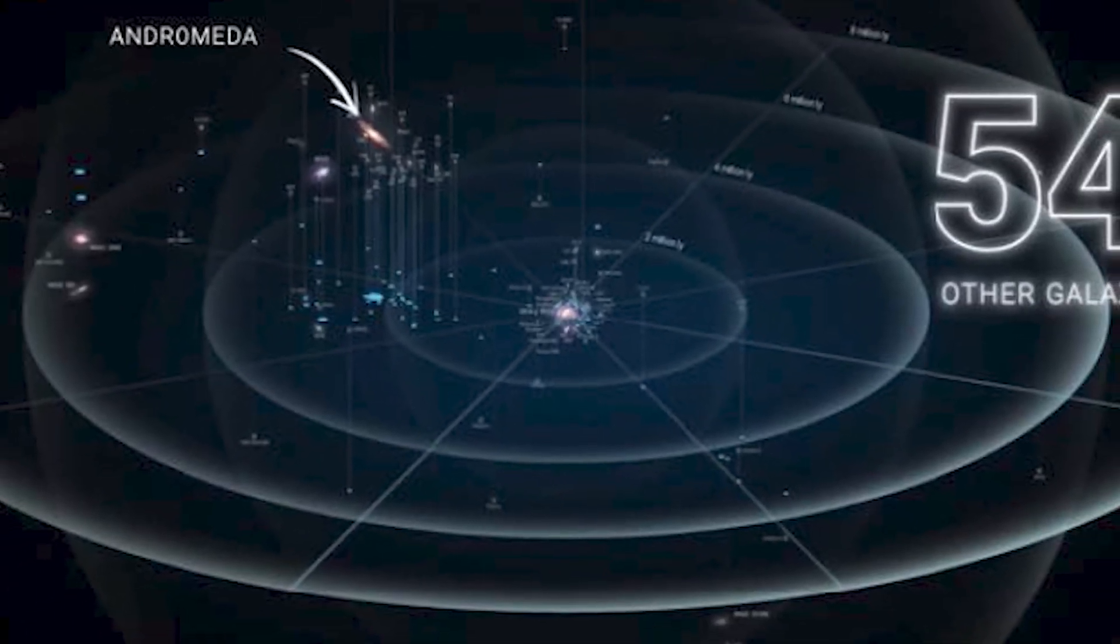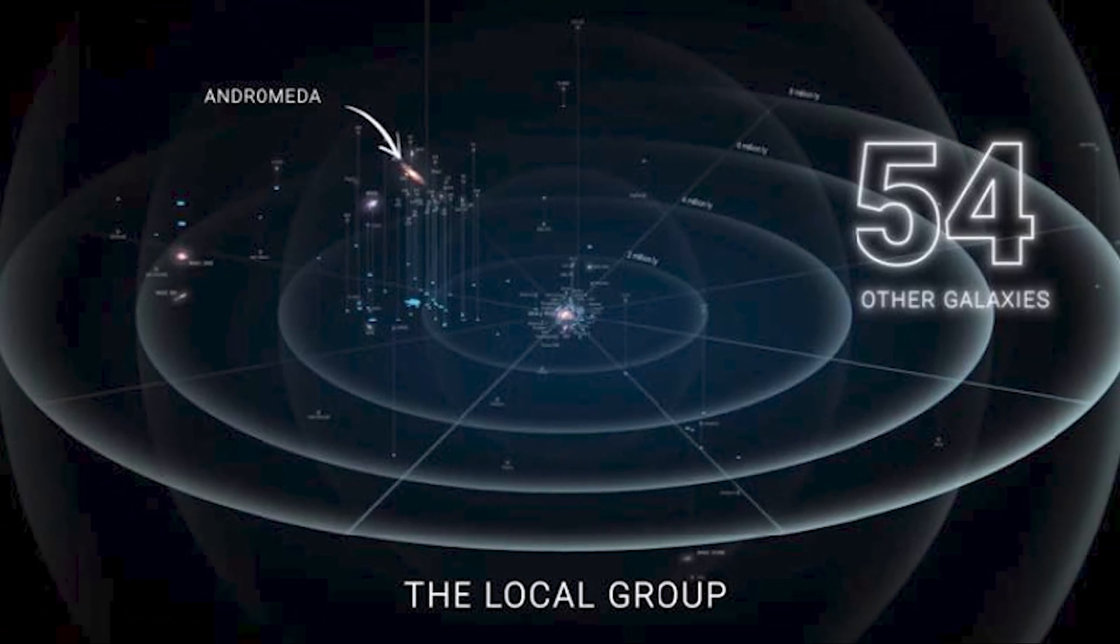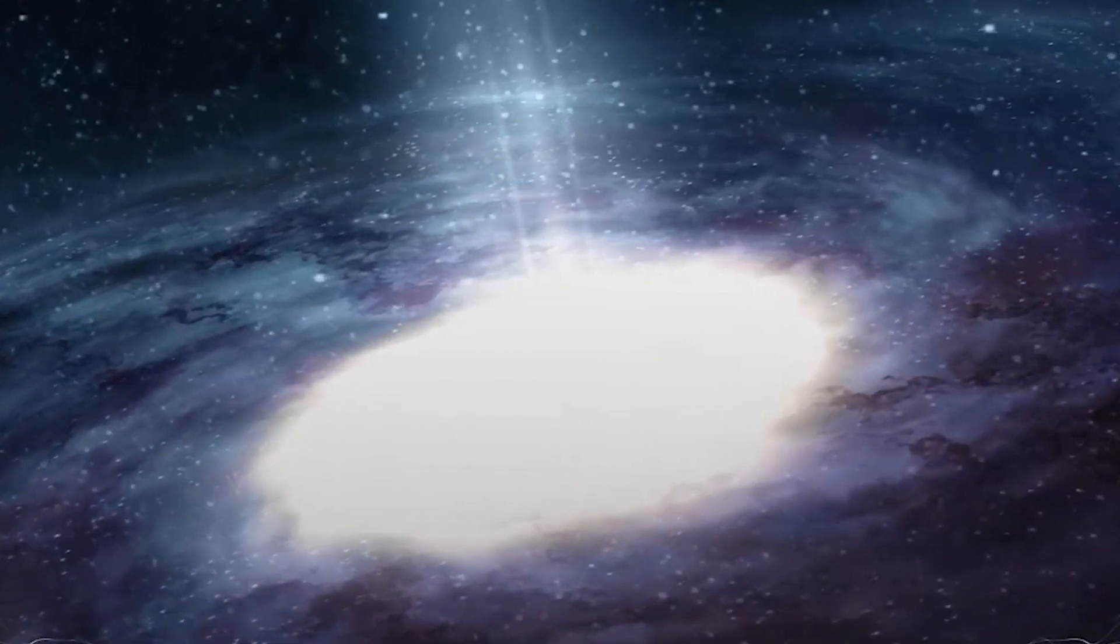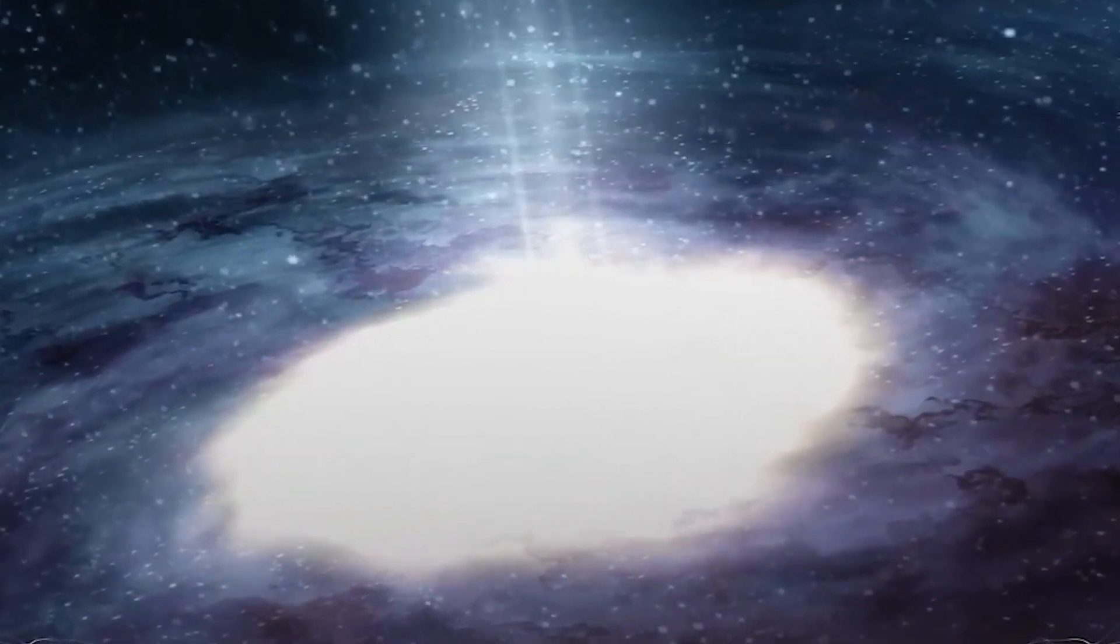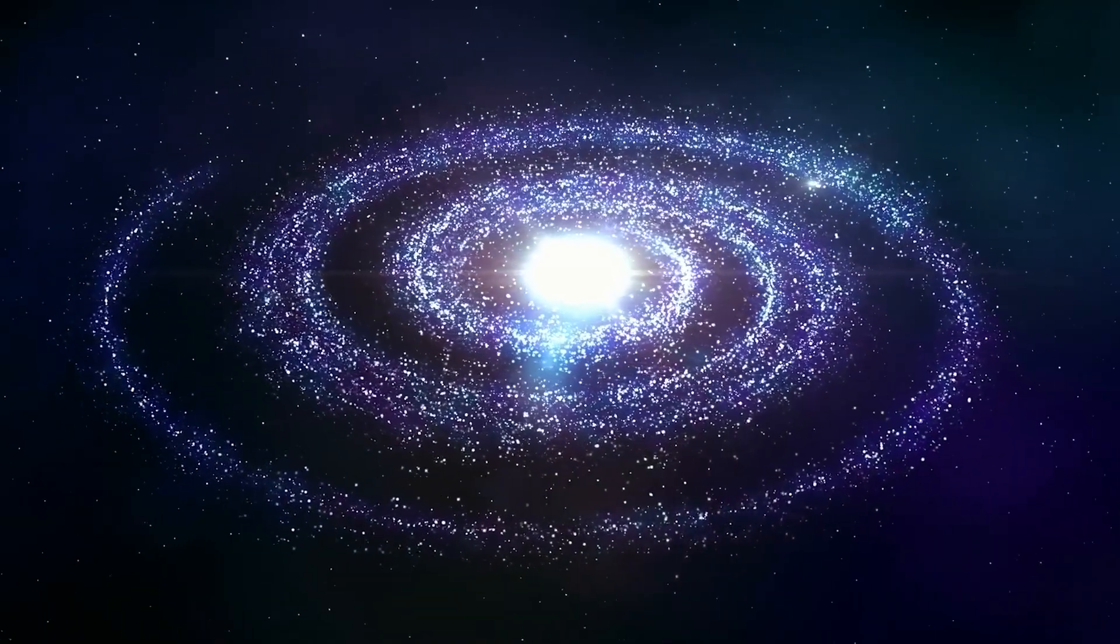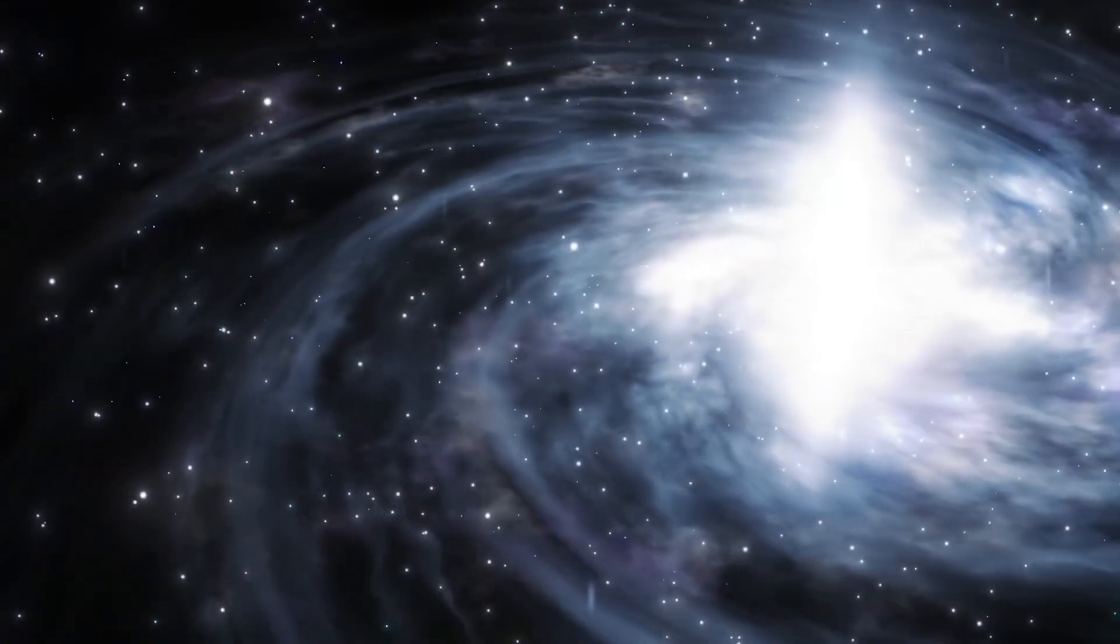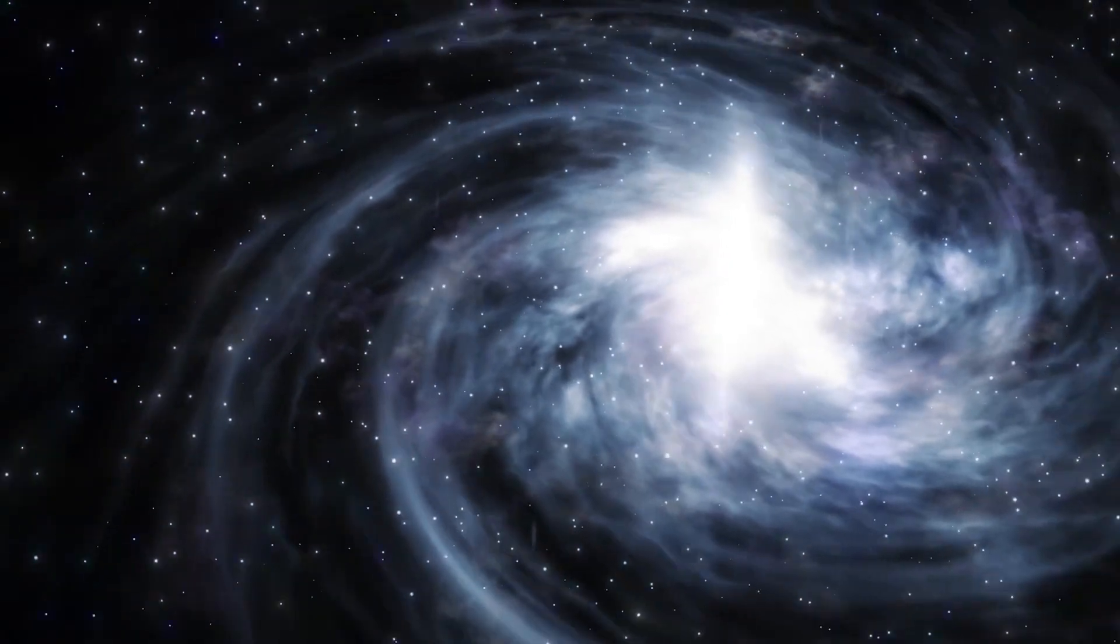But the complexity doesn't stop there. The Milky Way belongs to a cluster of galaxies known as the Local Group, which includes several neighboring galaxies. Together, they partake in a cosmic ballet, as they gravitate toward a powerful and enigmatic force, the Great Attractor. This gravitational push and pull propels the Local Group through space at several hundred miles per second.